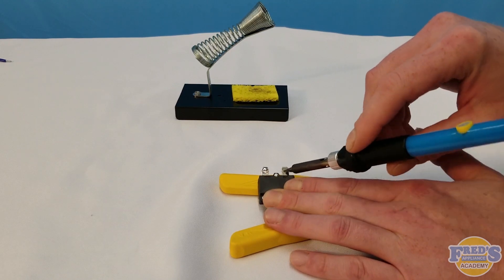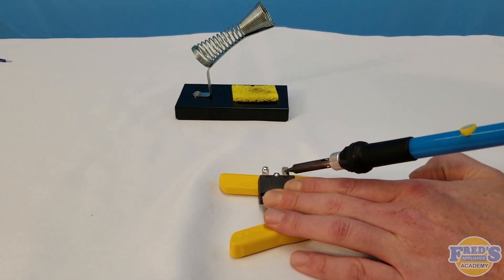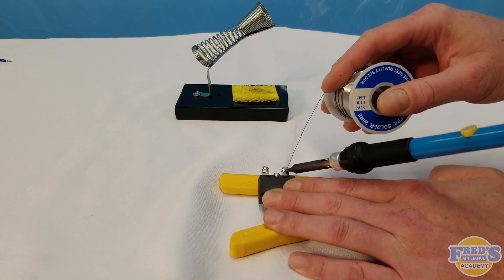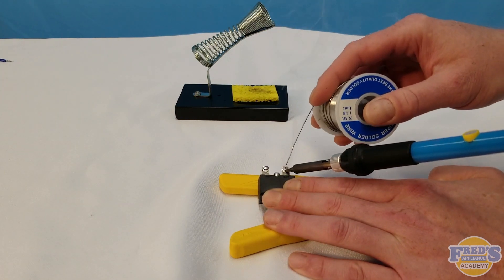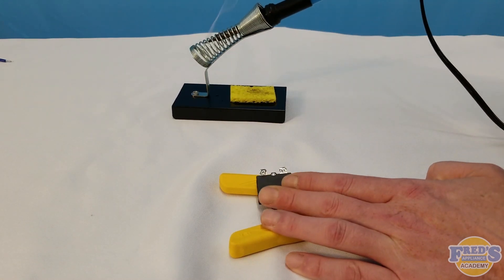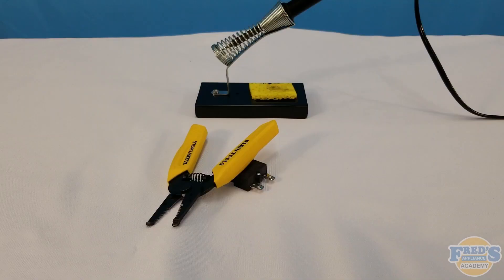The whole purpose of pre-tinning is to add the solder to the terminals and wiring, making it unnecessary to add any more when you're bringing the two connections together. Also, if you're wondering what the yellow sponge is in the background, that's to clean the needle of your soldering gun when it has too much solder or residue on it.